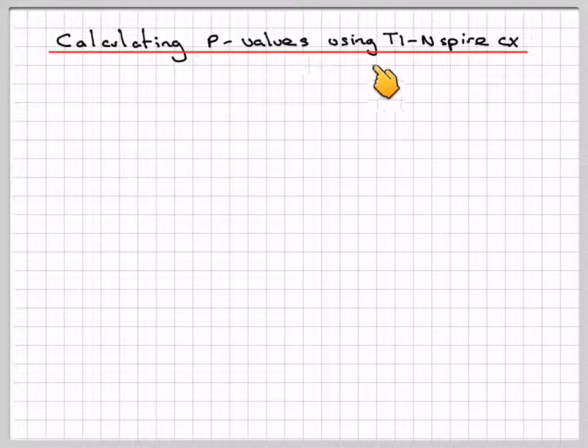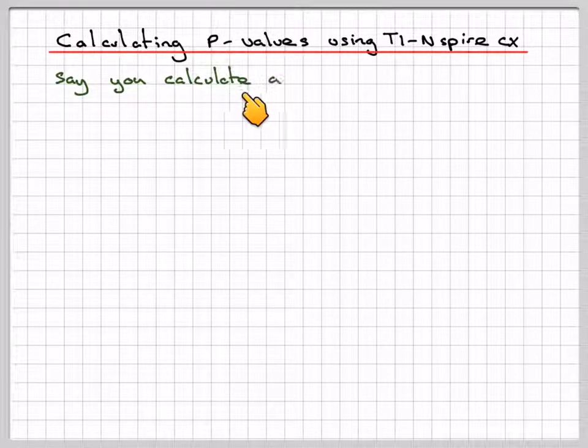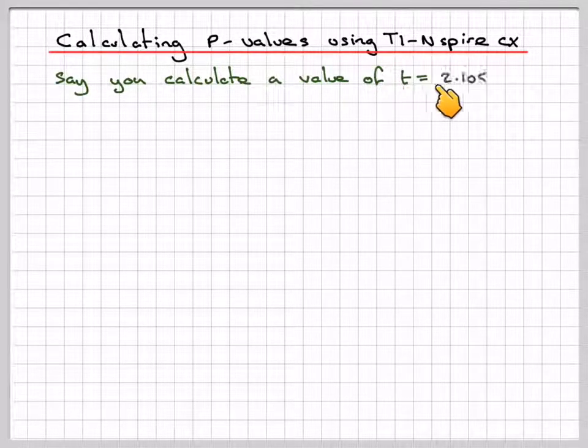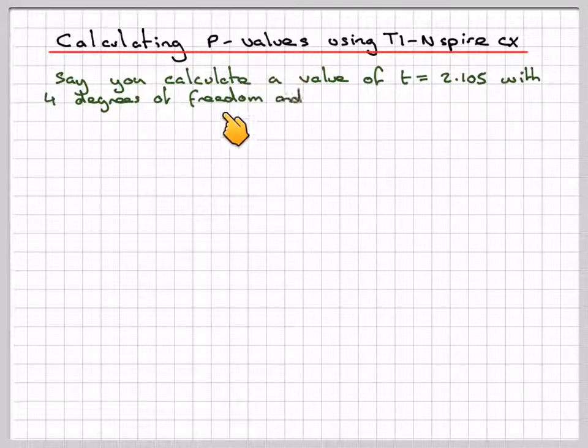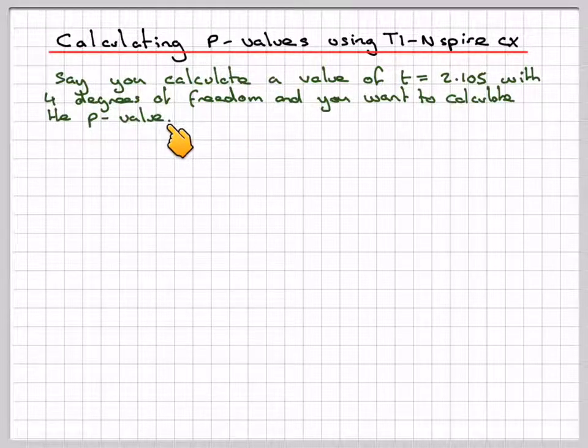Calculating p-values using the TI-Nspire CX calculator. Say you calculate a value of t = 2.105 with 4 degrees of freedom and you want to calculate the p-value.